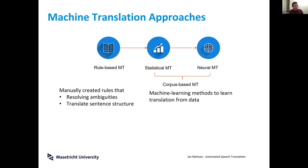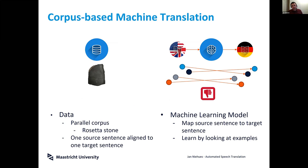In neural machine translation, we use what is nowadays called a neural network — or deep learning — as one large model which tries to learn the mapping from the source language to the target language. In this corpus-based machine translation, the basic components are the data and the model.